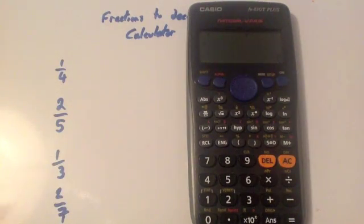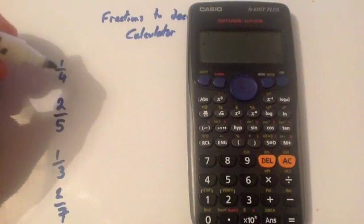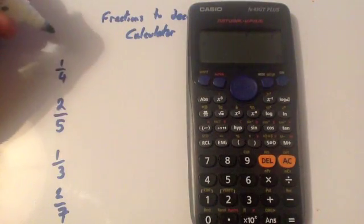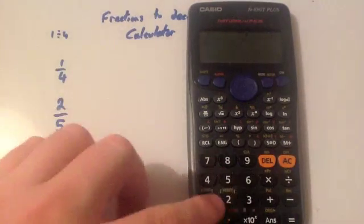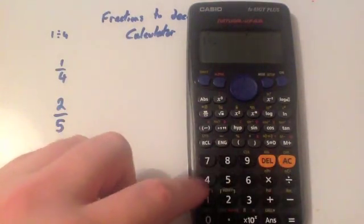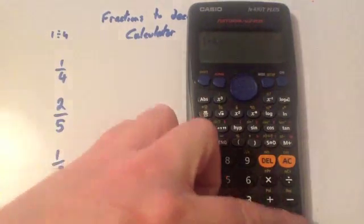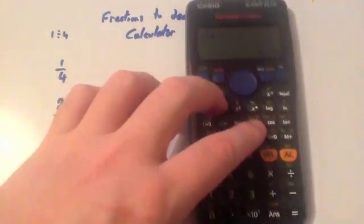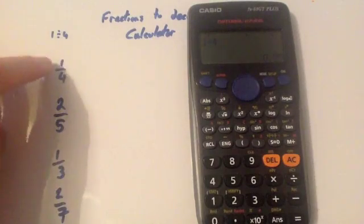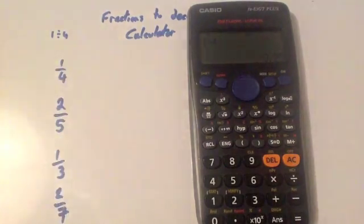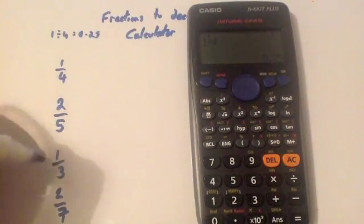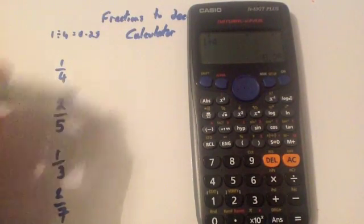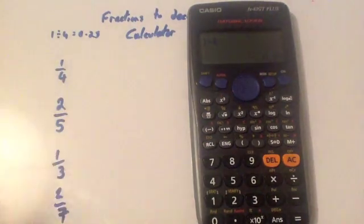Now of course you could do it, remember the line means divide. So you could do for a quarter, because the line means divide, you could do just the top, the numerator, one divided by four. Whenever you're doing something like that in your calculator make sure you're doing the numerator, one divided by four. I have seen students doing it the wrong way around, doing four divided by one. But it's one divided by four which equals 0.25. So you could do two divided by five, one divided by three, and two divided by seven. And that would convert all of these into decimals perfectly fine.